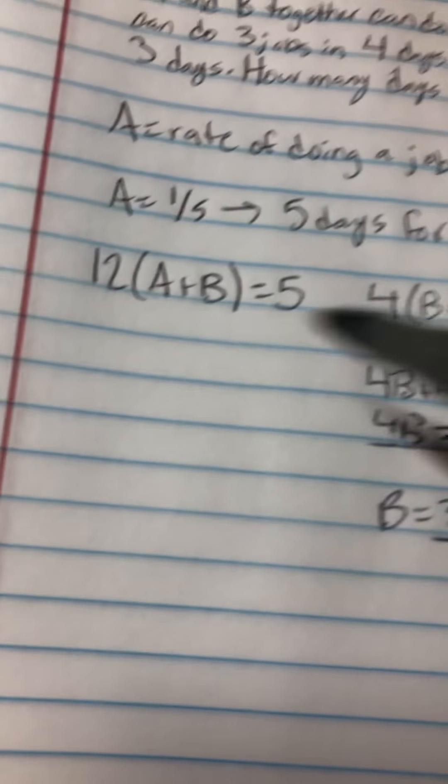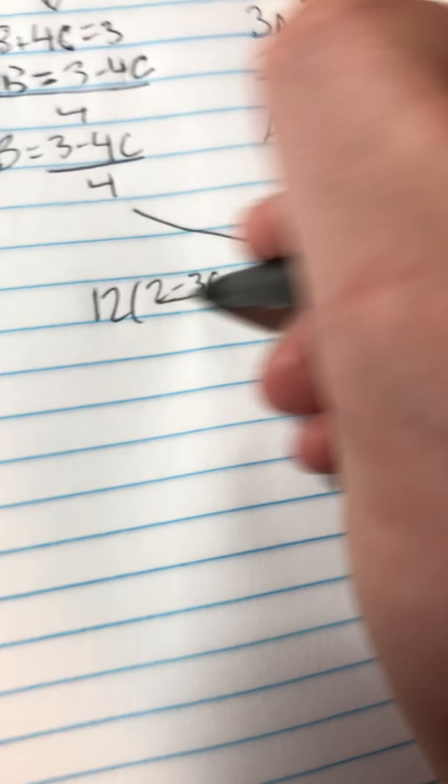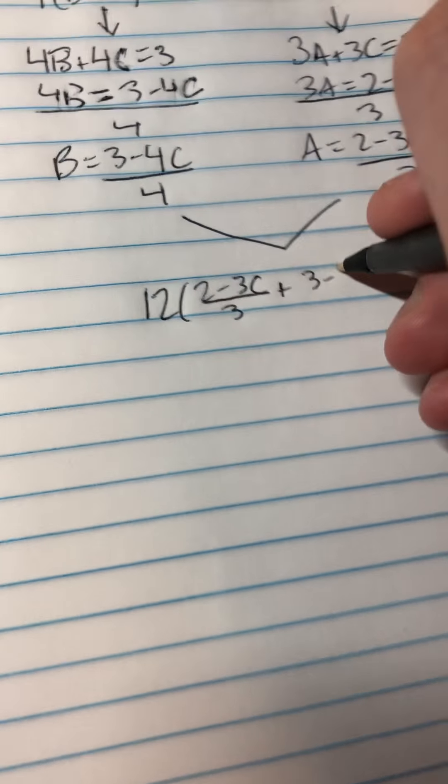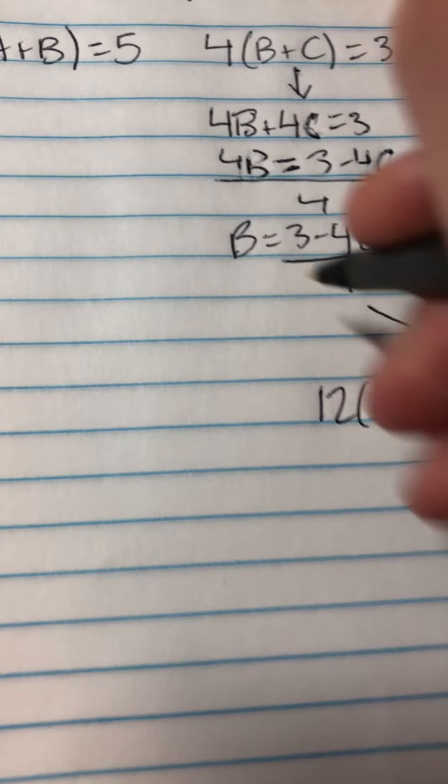So now I'm going to plug both of these into this equation. So I'd get 12, and A would be 2 minus 3C over 3, and then I'd do plus 3 minus 4C over 4, which I got for B. And that would equal 5.